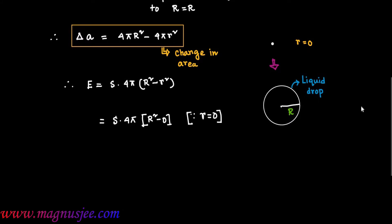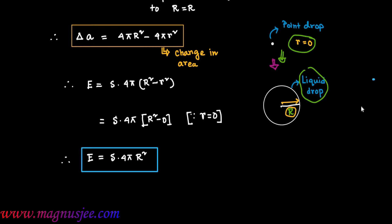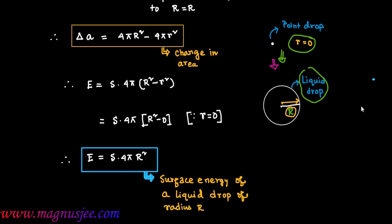Since the initial radius r was 0, small r equals 0. In the diagram, we have a point liquid drop of initial radius r equals 0, now blown into a liquid drop of radius capital R. Therefore, E equals S dot 4πR². This is the surface energy of a liquid drop of radius capital R.